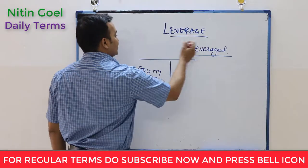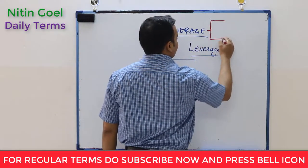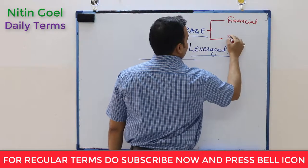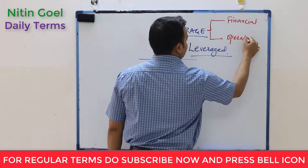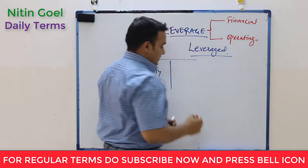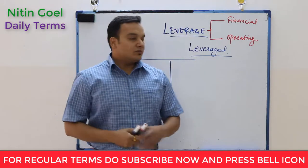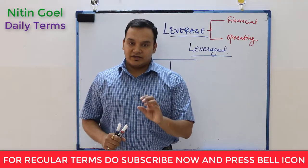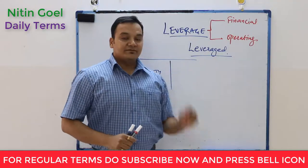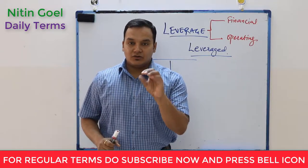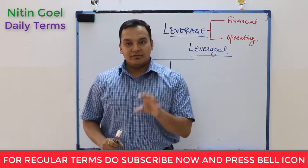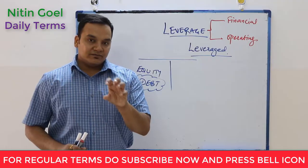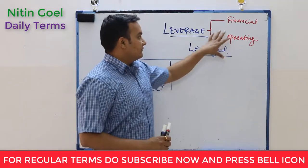When we talk about leverage, there are two types of leverages that we learn normally. One is financial leverage and one is operating leverage. Financial leverage is about fixed interest which you pay against the loan you have taken from the market. And operating leverage is fixed cost in the company, which we benefit from. These are all levered because these are all fixed.